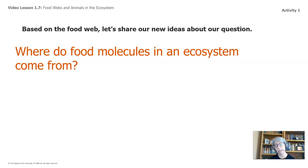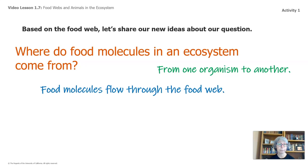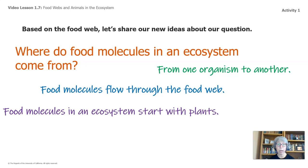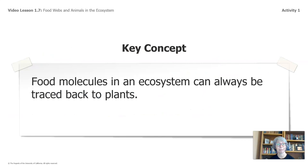Based on the food web, let's share our new ideas about our question: where do food molecules in the ecosystem come from? From one organism to another, food molecules flow through the food web, and food molecules in an ecosystem start with plants. This is a key concept: food molecules in the ecosystem can always be traced back to plants. Write that one down — that's important.